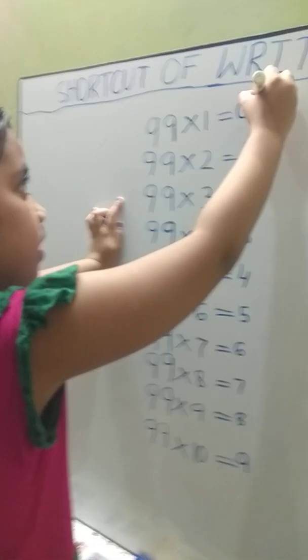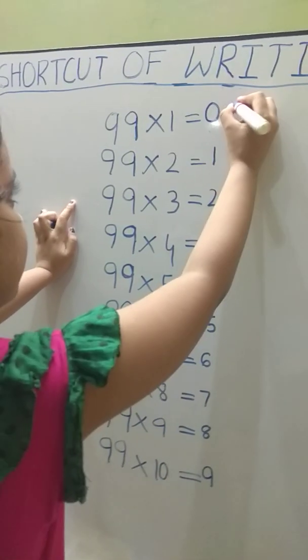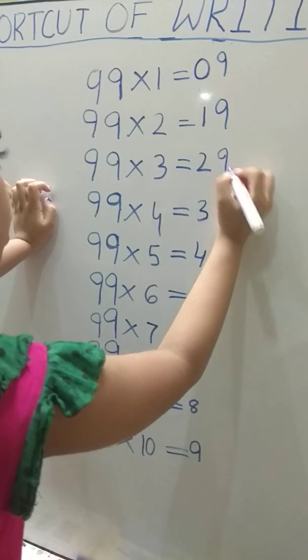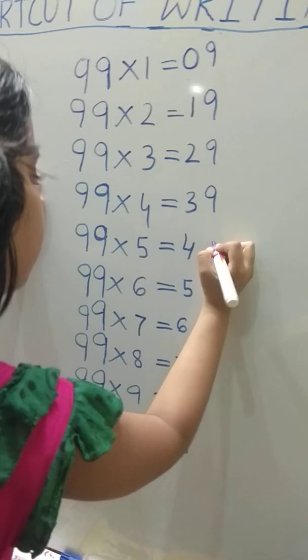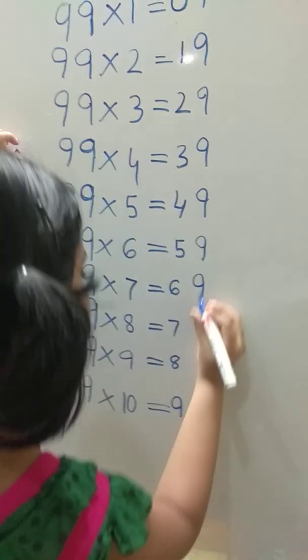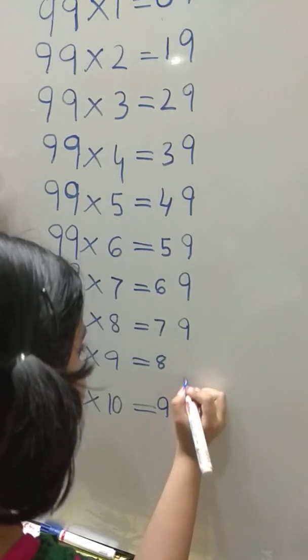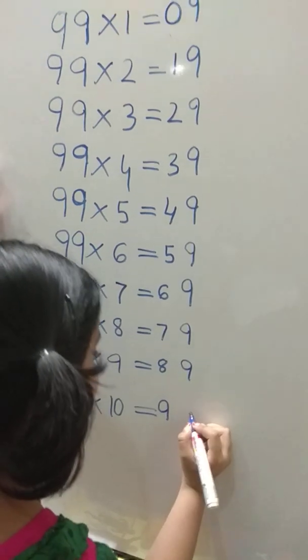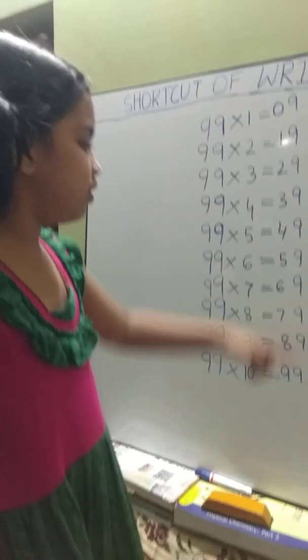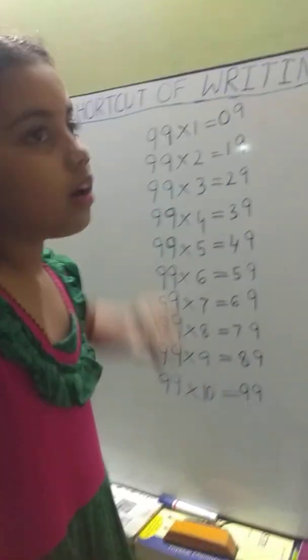Now we should write here to here 9 only. Now we should write 0 to 9, bottom to top.